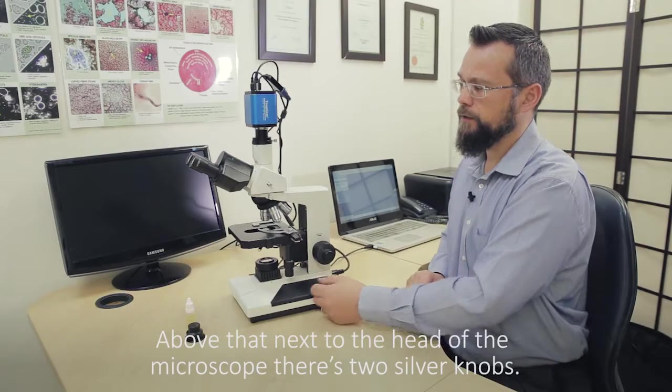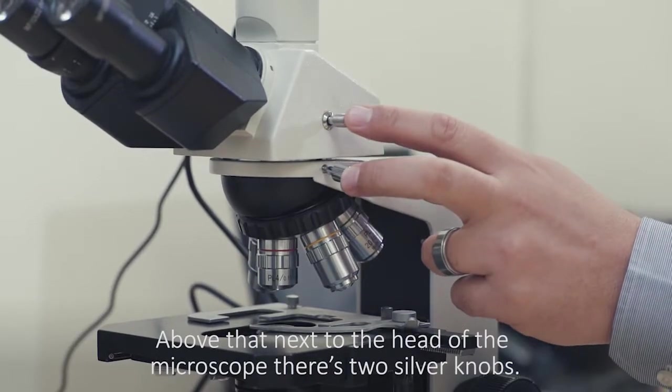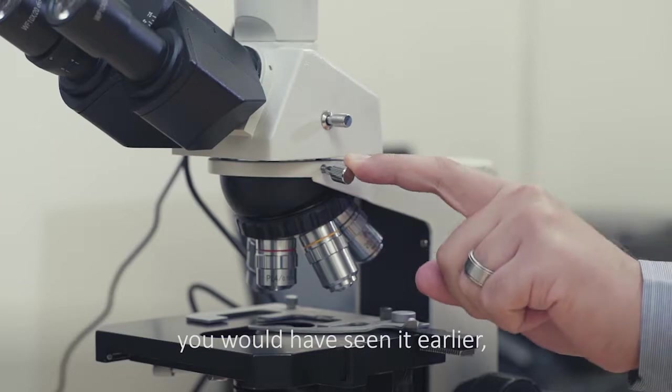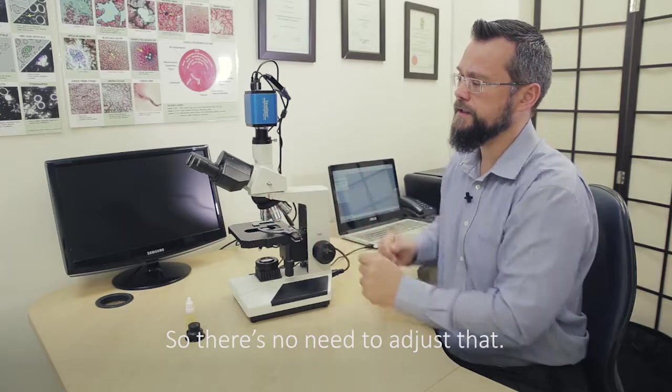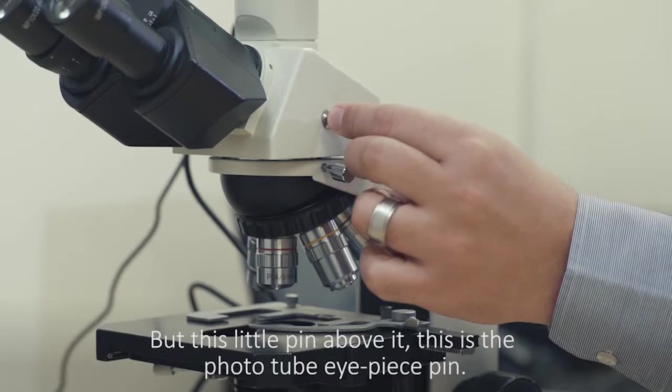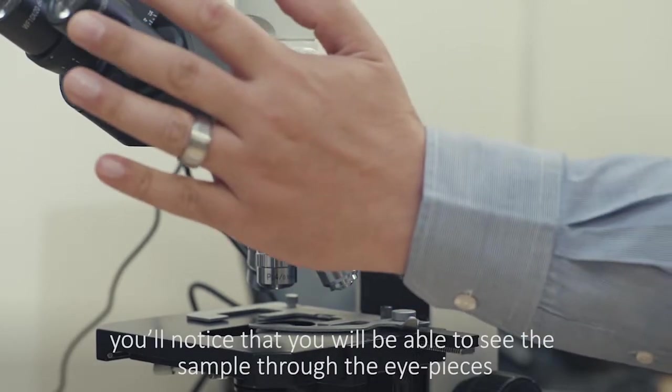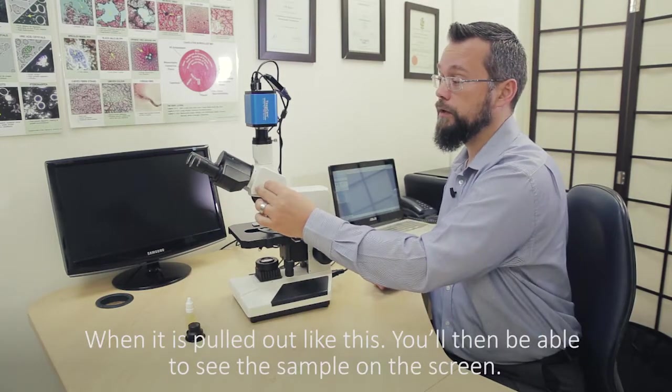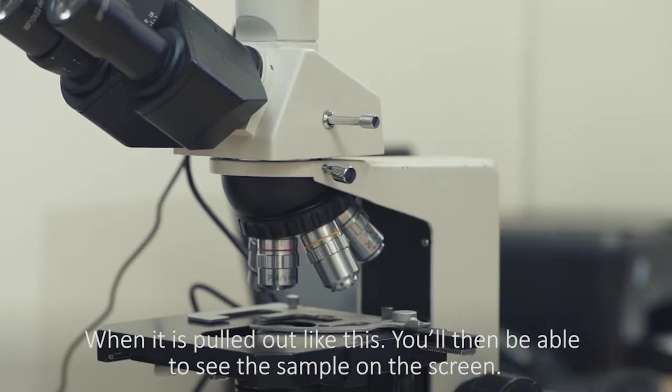Above that, next to the head of the microscope, there's two silver knobs. This knob at the lower end here you would have seen earlier while assembling the microscope. This holds the trinocular head in place, so there's no need to adjust that. But this little pin above it, this is the photo tube eyepiece pin. Basically when it's pushed in, you'll be able to see the sample through the eyepieces and there'll be nothing on the screen. When it's pulled out like this, you'll then be able to see the sample on the screen.